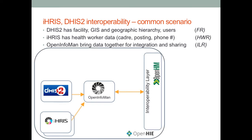This is part of the larger Open HIE architecture, which is bringing the various components of the health information system together. What we are adding on here is the interoperability layer, which plays the role of making the data available to external point-of-care systems. It handles routing of data through the interoperability layer into the back-end systems, provides security in terms of encryption and auditing, and controls the synchronization and timing of data between the various components of the health information system.